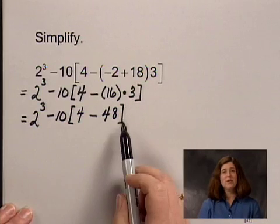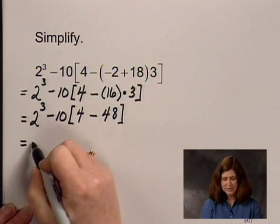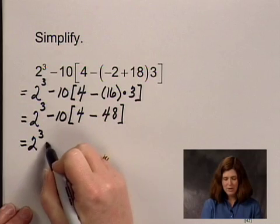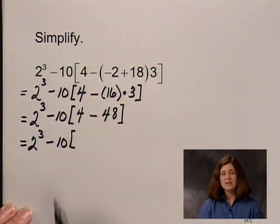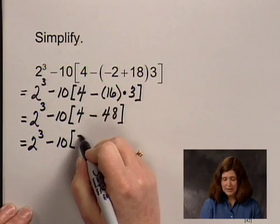Now still working in the grouping symbols, I have 2 to the third power minus 10 times 4 minus 48 is negative 44.